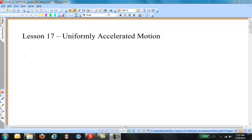Hello again, and welcome to Advanced Physics for High School Students. This is Lesson 17, and it is entitled Uniformly Accelerated Motion.